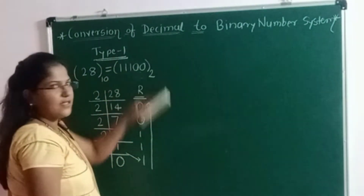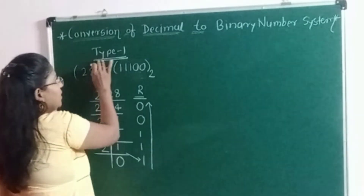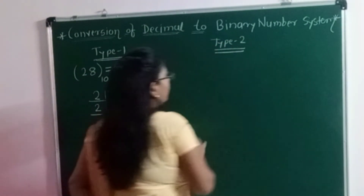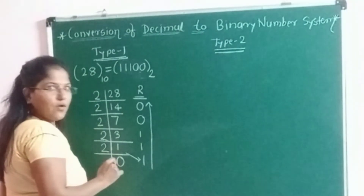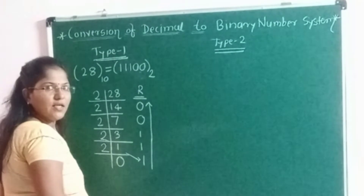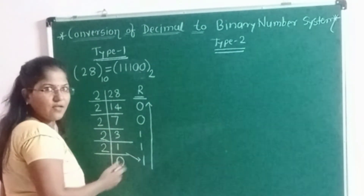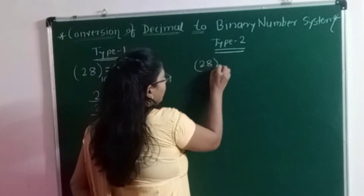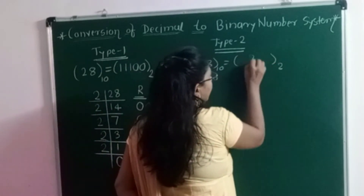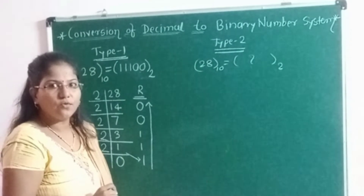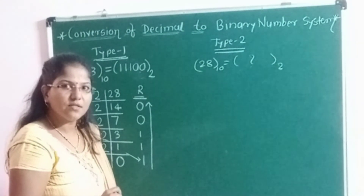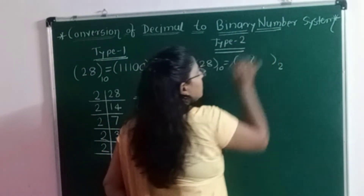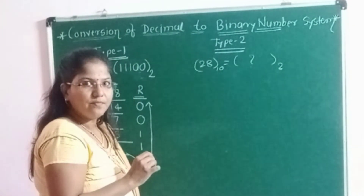Now I will explain the second method, or Type 2, as well — how we can convert the decimal to binary. We will take the same decimal number so that at the end we can verify whether the binary equivalent we are getting is correct or not. The decimal number is 28. In the second method, first of all we have to write the weighted values of the number system into which we are going to convert the number. Here we are converting to binary, so we should know the weighted values of binary.